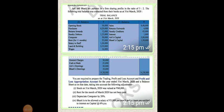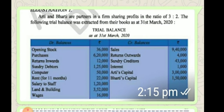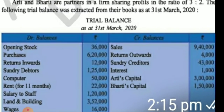Good morning students. Today we are going to solve one question for partnership. In this question we are going to make Trading P&L and then P&L Appropriation. P&L Appropriation is very important in partnership. First you will make Trading and P&L, then you are going to make the P&L Appropriation. Now we start the question — just see, one question is there, it's a trial balance, all the heads are given.